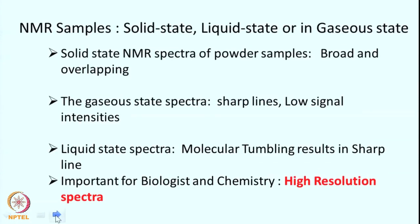What kind of samples can we look at in NMR? All sorts of samples ranging from solid state, liquid state, or gaseous state. In solids, the spectrum of a powder sample generally gives broad and overlapping lines because the spins are arranged very close to each other, giving rise to a different kind of spectrum.